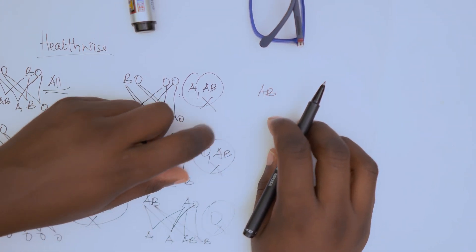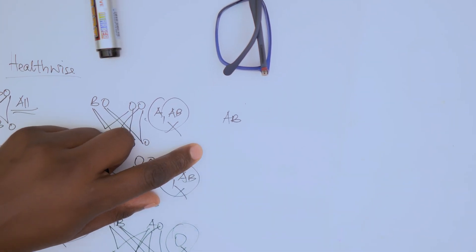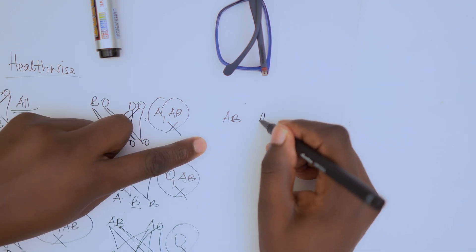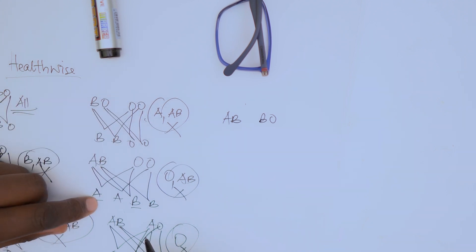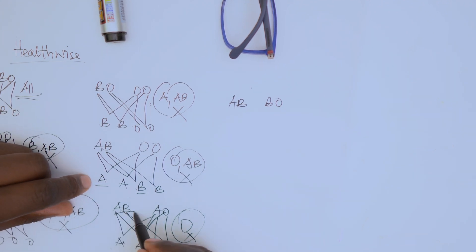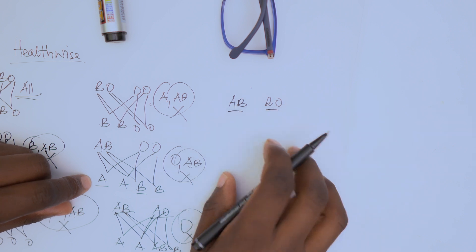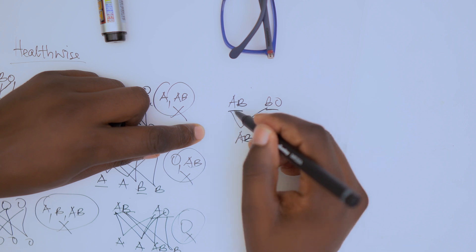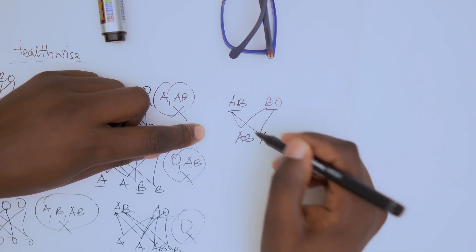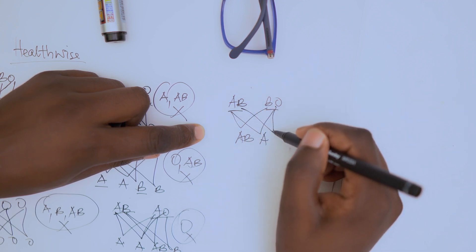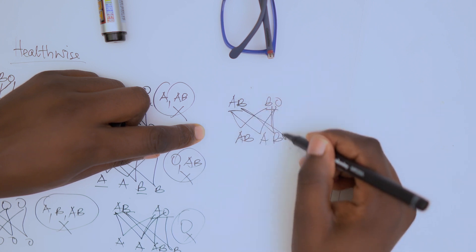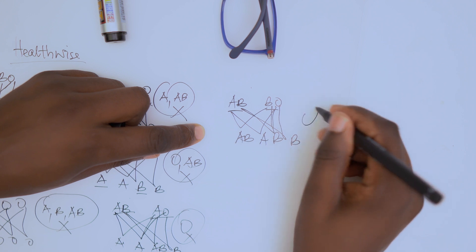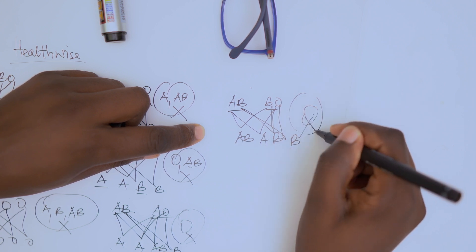If one partner is AB and the other partner is B with genotype BO: you get AB, A, B, and B. So you cannot find O in that family either.